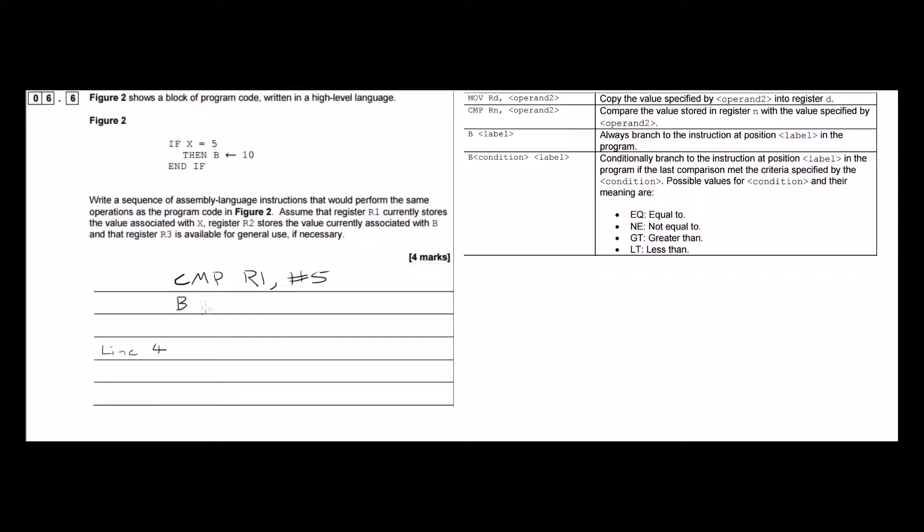So I'm going to, for the second part of the instruction, I'm going to write N, E, for not equal to. And then label, so we're going to skip to line 4.